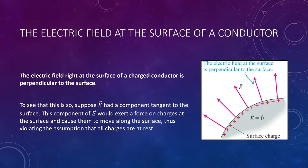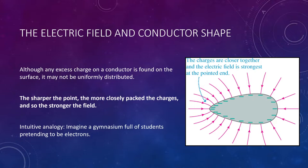One more point: while charges reside on the surface, they don't necessarily have to be evenly distributed. It depends on the shape of your conductor. If you have a conductor that's not symmetrical — not a perfect sphere — the charges will be distributed in a unique way. Wherever you have a sharp point, charges are going to be more densely packed than areas with a broader surface. The sharper the point, the more closely packed the charges, and the stronger the electric field.